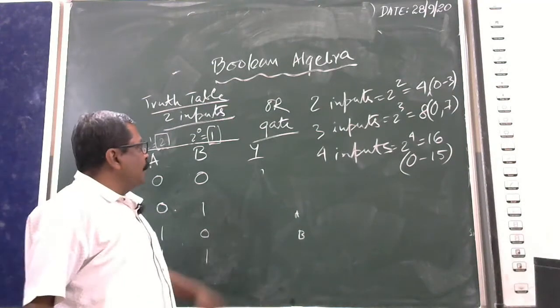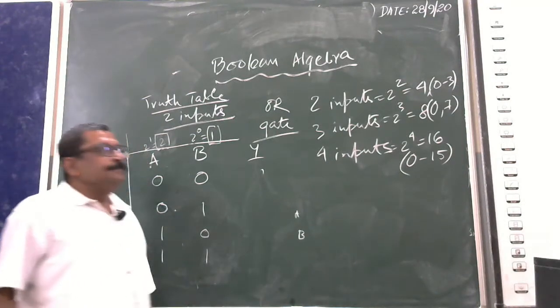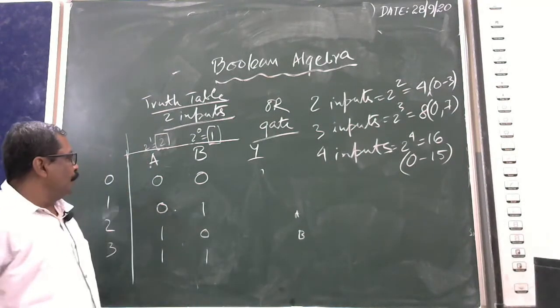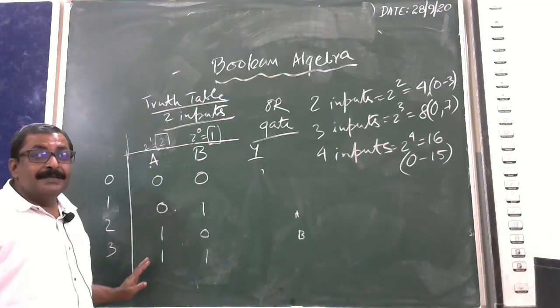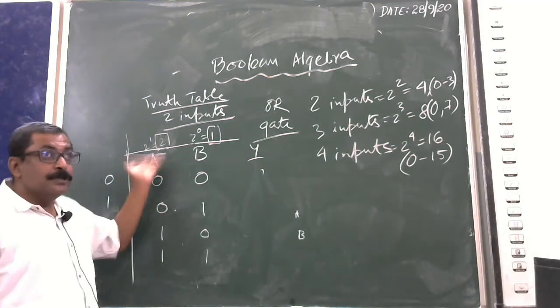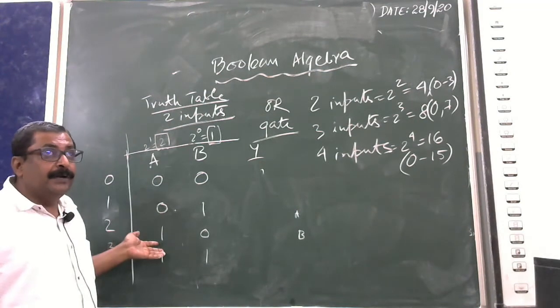In the case of the OR gate, the truth table input combinations remain the same since there are still two inputs — A and B — so nothing changes there. Only the output changes.